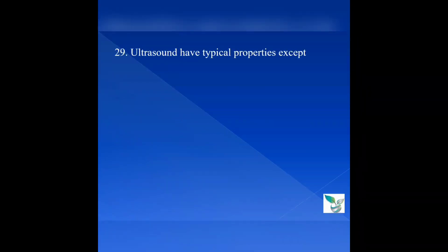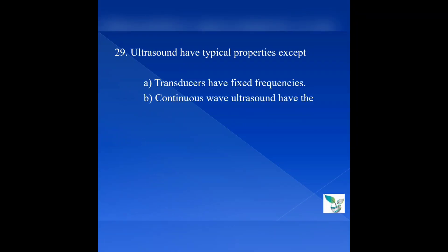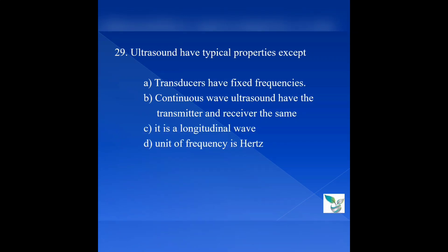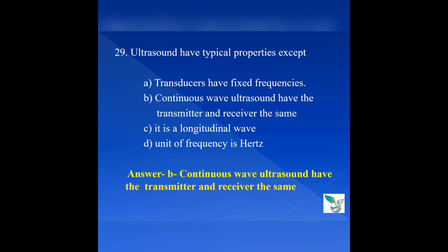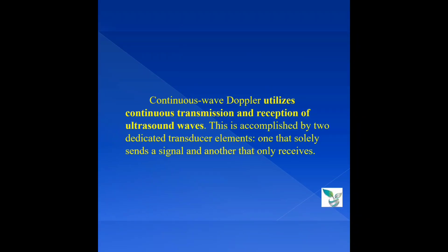Question number 29: Ultrasound has typical properties except — option A, transducers have fixed frequencies; option B, continuous wave ultrasound has the transmitter and receiver the same; option C, it is a longitudinal wave; option D, the unit of frequency is hertz. The answer is option B — continuous wave ultrasound has the transmitter and receiver the same. Continuous wave Doppler utilizes continuous transmission and reception of ultrasound waves, accomplished by two dedicated transducer elements — one that solely sends a signal and another that only receives.